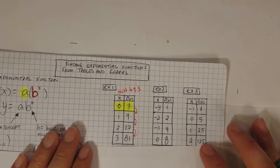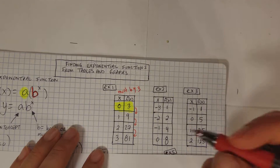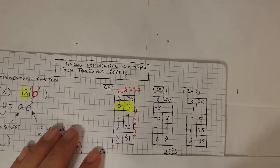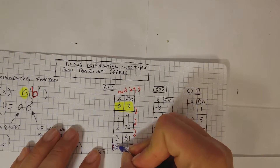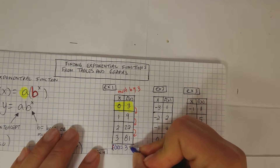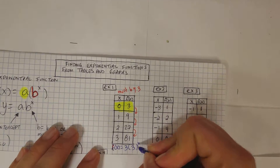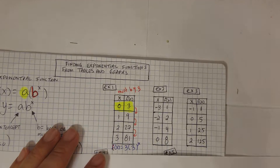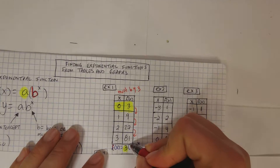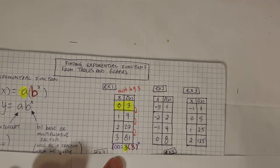So the first example — example number one — the function would be f of x is equal to a, which happens to be three in this case, times b, which also happens to be three, to the power of x. If you're wondering where I got these numbers from: three is where x is equal to zero, b is the number that you're multiplying by, and this is to the power of x.